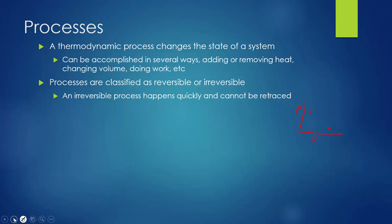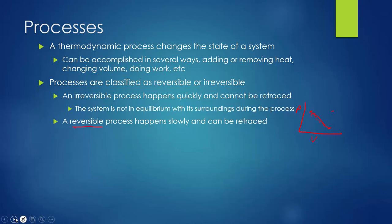A reversible process happens very slowly, and we could not only know how it moved from one place to another, we could recreate it and move backwards. Irreversible doesn't mean we can't return to the original state, just that we won't follow the same path. In reality, there's no such thing as a completely reversible process, but we can get fairly close if we do the process slowly so that it remains in equilibrium with its surroundings throughout.